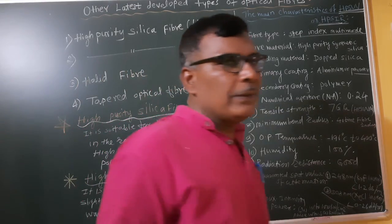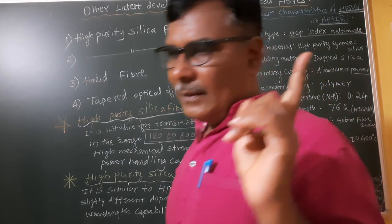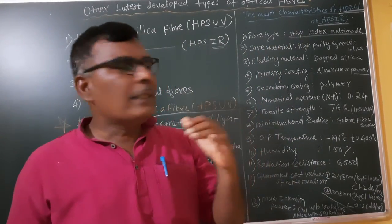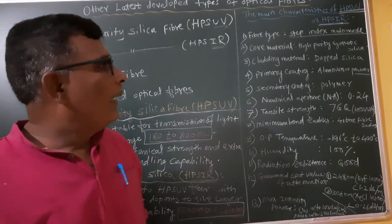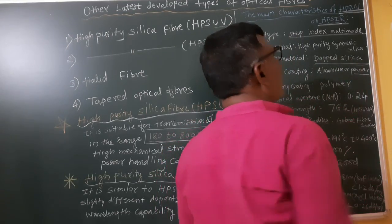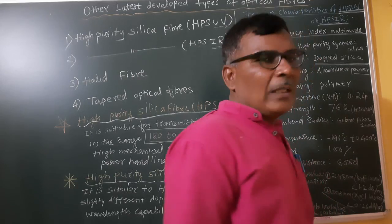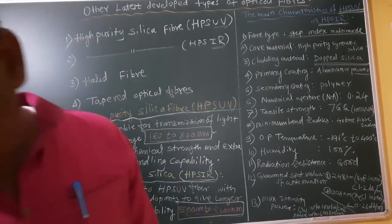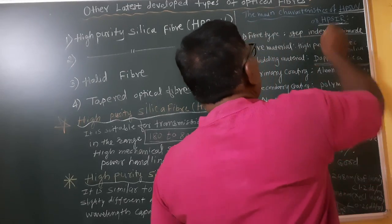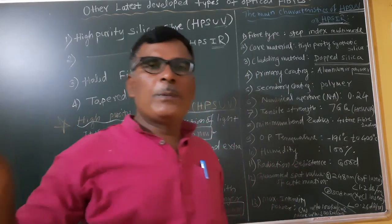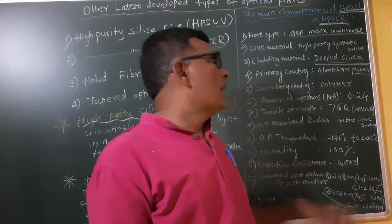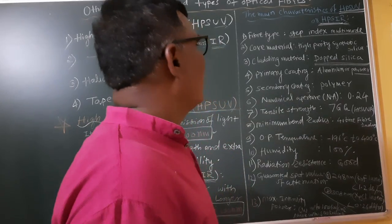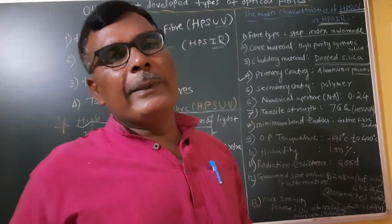The core material used is high purity synthetic silica, and the fiber type is step index multimode. The cladding material used is doped silica. A multiple choice question may be asked on this point — which type of cladding material is used in HPSUV or HPSIR? The answer is doped silica.